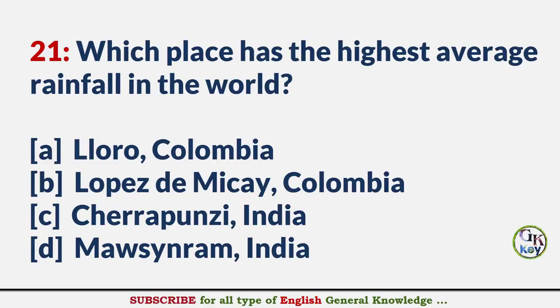Which place has the highest average rainfall in the world? Answer D: Mawsynram, India.